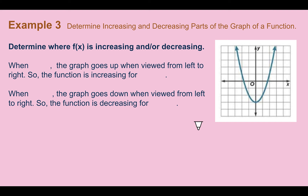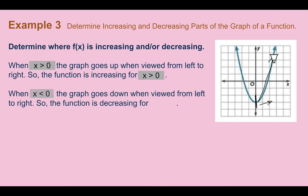Example 3: Determine increasing and decreasing parts of a graph of a function. Determine where f of x is increasing or decreasing. When x is greater than 0, the function is going up — it's increasing for x greater than 0. But when x is less than 0, the function is decreasing. So it decreases until it gets to 0, then it hits that minimum, and then it increases after 0. We can write where it switches, and that number is used for our intervals — we're just using the x-coordinate.